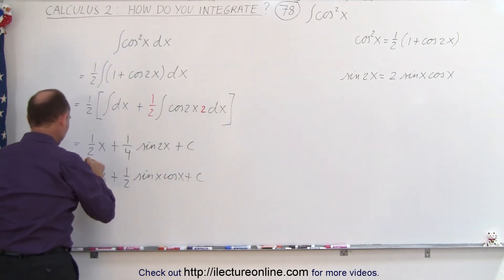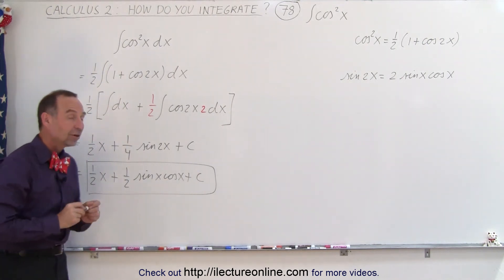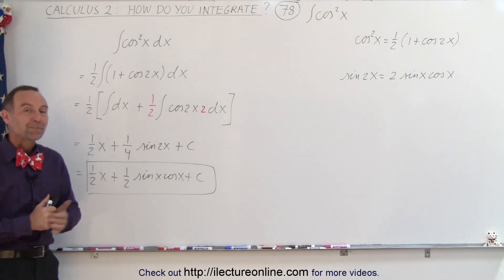plus a constant of integration. And that will typically be the way you'll find the result of the integral of the cosine square of x. And that's how it's done.